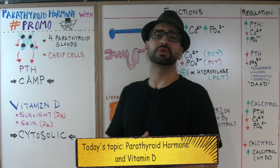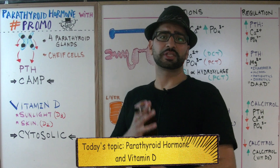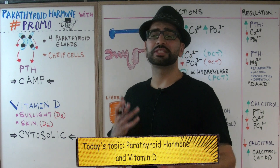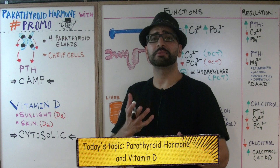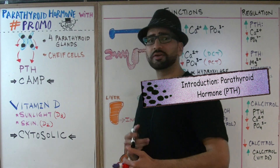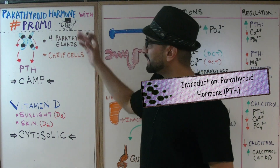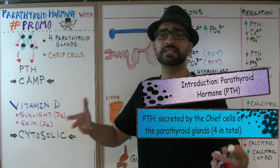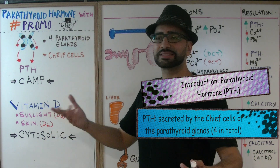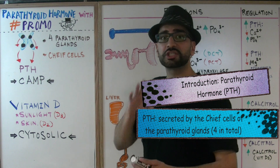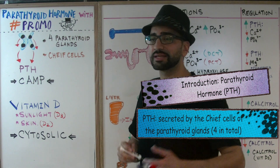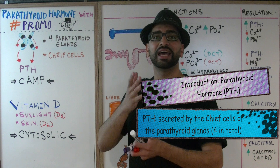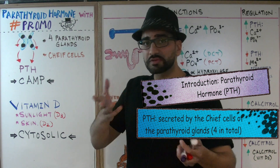Today we're going to talk about the parathyroid hormone. I'm going to give you an introduction to the functions of the parathyroid hormone and how it is regulated. We're also going to introduce the functions and regulation of vitamin D. The parathyroid hormone is secreted from the parathyroid glands — there are actually four parathyroid glands. The chief cells are what actually synthesize and secrete the parathyroid hormone.